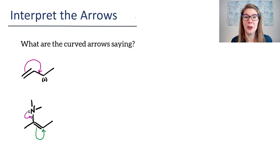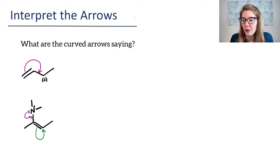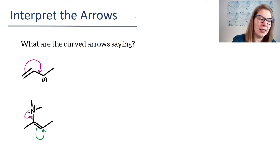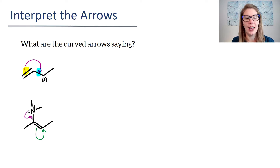Remember in the last video I told you that when I was a student I would look at these and think I got them on Monday, and then on Tuesday I'd go, I can't do it anymore. That's what resonance is like — it's just going to be a roller coaster of understanding. You're going to feel like you're getting there and then you won't the next day, and that's completely normal. When we're looking at these curved arrows, this one is saying where we're starting: take those pi electrons and put them here to make a new bond.